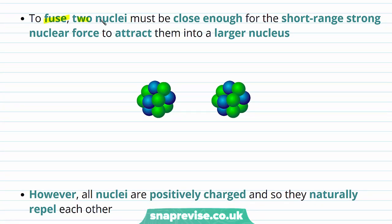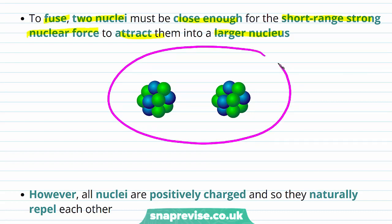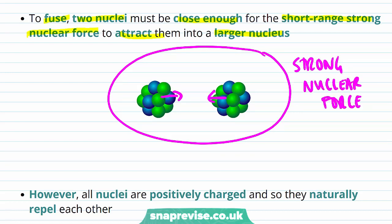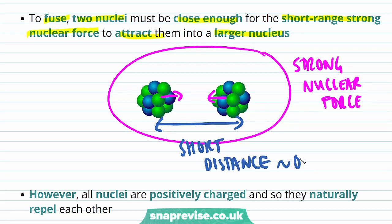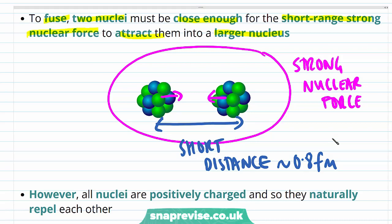In order to fuse, two nuclei must be close enough for the short-range strong nuclear force to attract them into a larger nucleus. They must be a very short distance apart — approximately 0.8 femtometres. Remember that 1 femtometre is 1×10⁻¹⁵ metres.